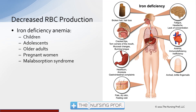Decreased red blood cell production is one of the three ways we can end up with anemia. A common cause is iron deficiency. As you can see from the diagram on the right, there are many different manifestations, but the one we're most concerned with is the effect on oxygenation in the body. Iron deficiency anemia often occurs in children and adolescents who aren't taking in enough iron in their diet, and since they're still in growing stages, maintaining adequate iron intake is especially important.